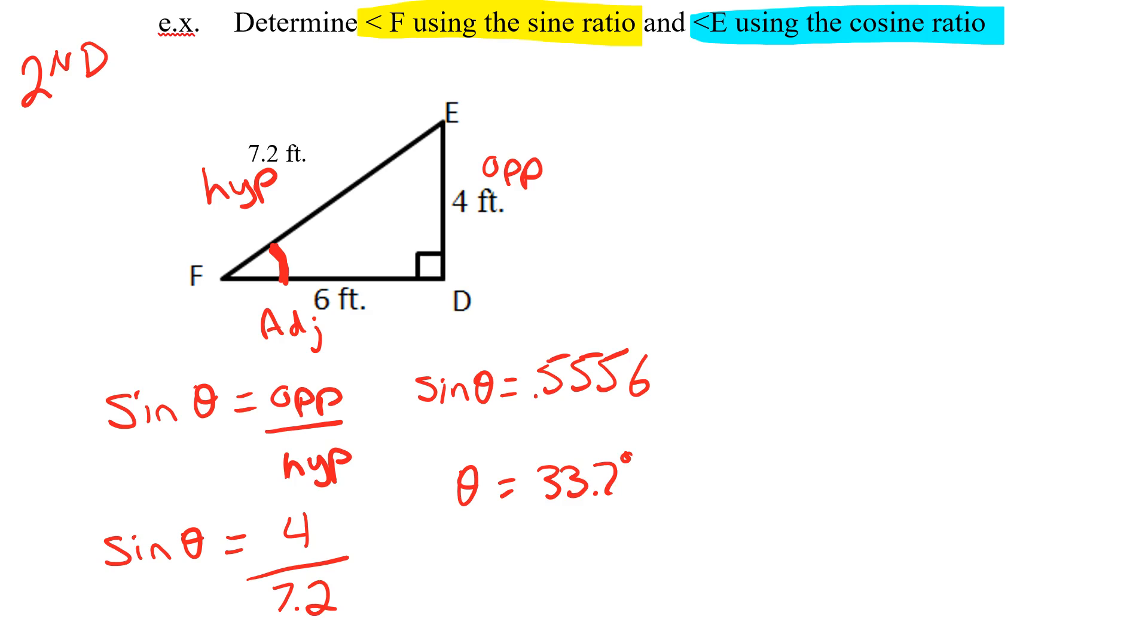Okay now let's solve for E using the cosine so again I'm changing angles I got to relabel. Hypotenuse stays the hypotenuse. Through the angle through the triangle to the opposite, touching the angle is the adjacent.